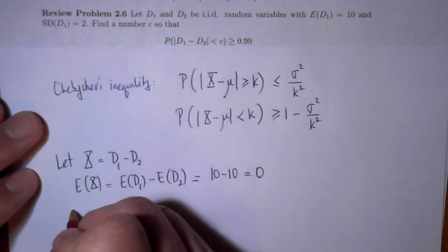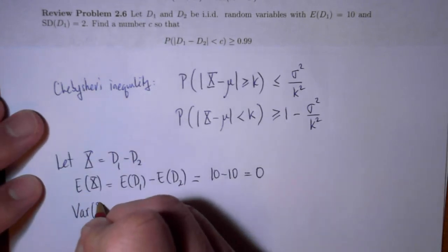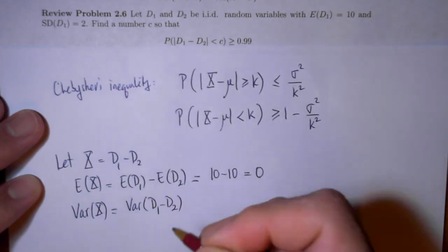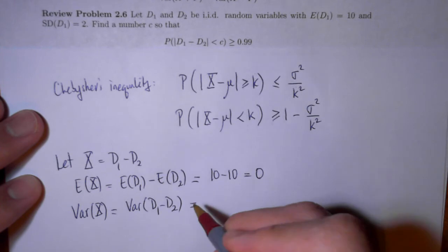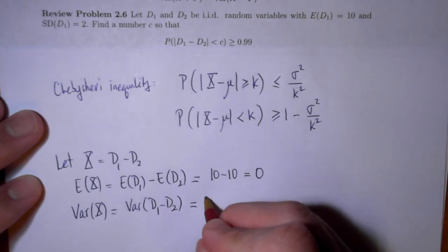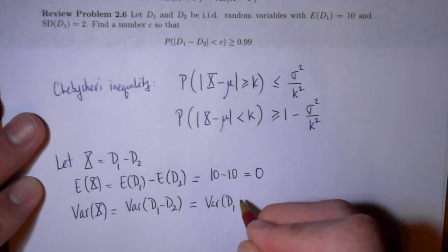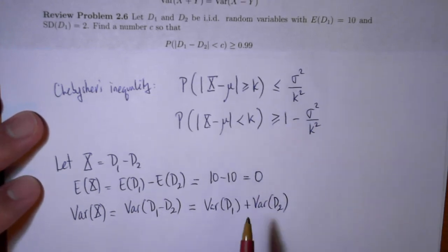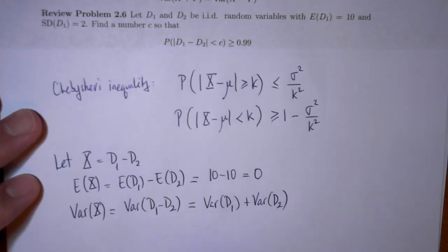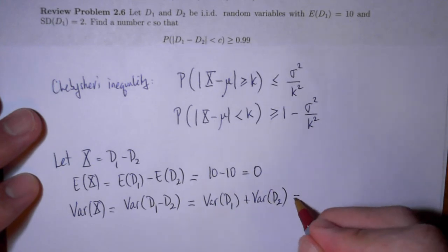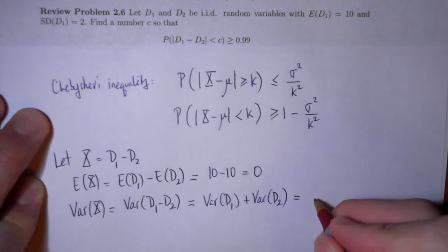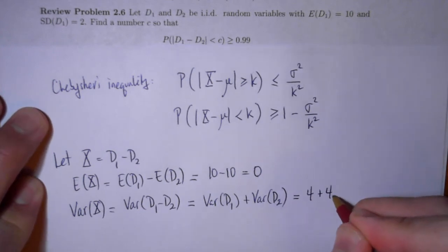Also let's figure out the variance of x. The variance of x is the variance of D1 minus D2 and by review problem 2.5, the variance of this is equal to the variance of D1 plus the variance of D2. So the reason for the plus sign we discussed in problem 2.5 in this review. And so this is equal to, well let's see, the standard deviation is given to be equal to 2 and so the variance is 4, so 4 plus 4, which makes 8.